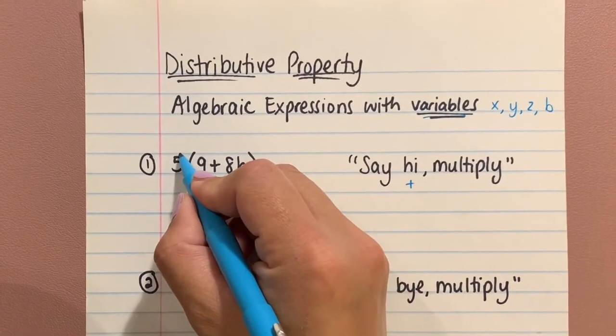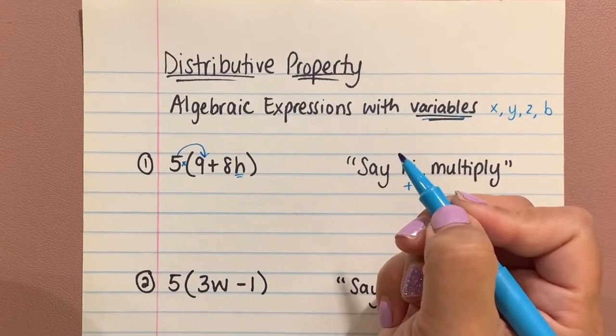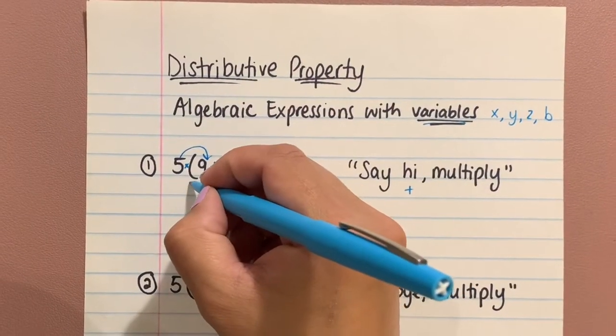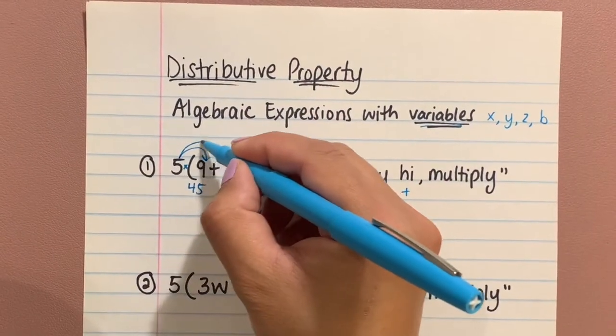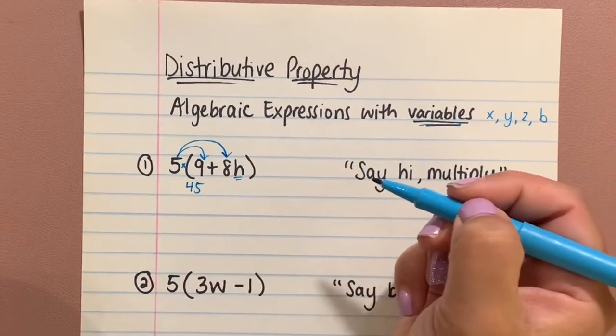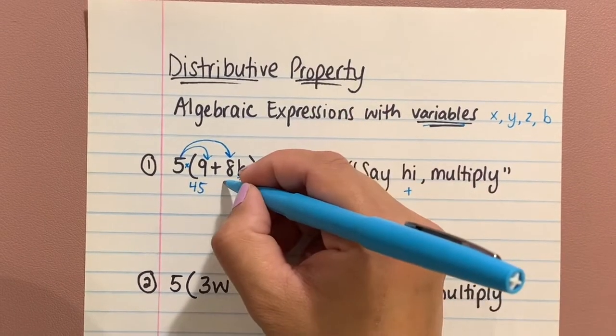So the five is going to go into the house and say hi, multiply, to the nine. Five times nine gives you 45. The five is also going to say hi to the eight by multiplying—five times eight gives you 40.